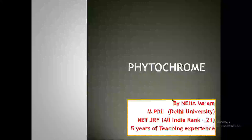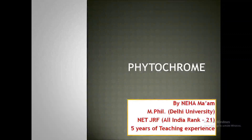Light is an important inducer of various plant processes including photosynthesis and photomorphogenesis. Today we are going to discuss a very important protein which is involved in photomorphogenesis, and that protein is known as phytochrome.